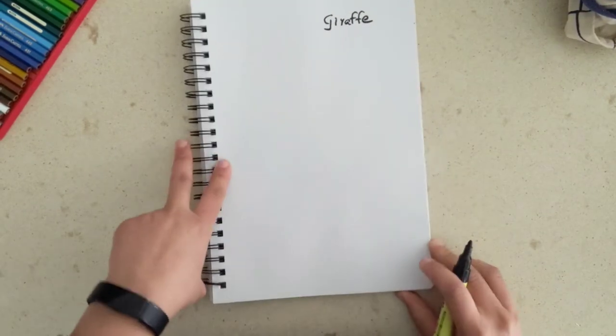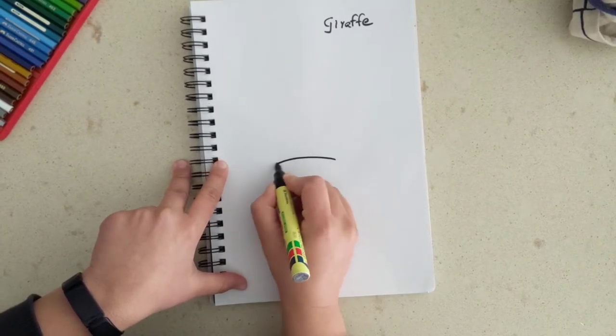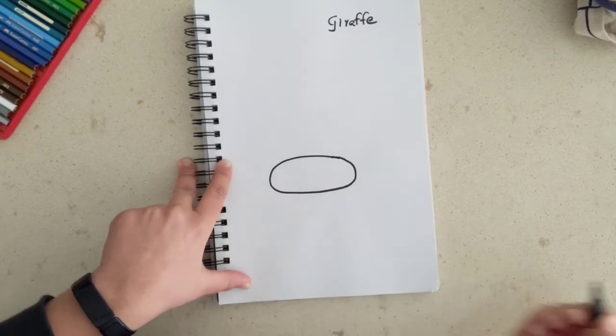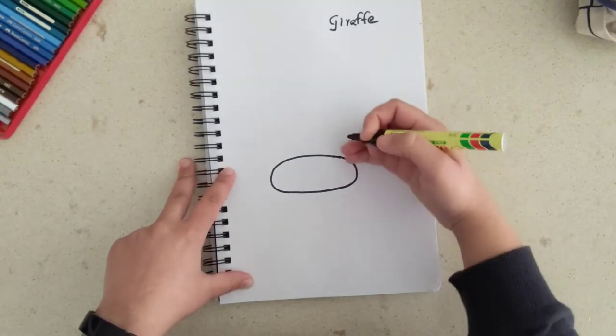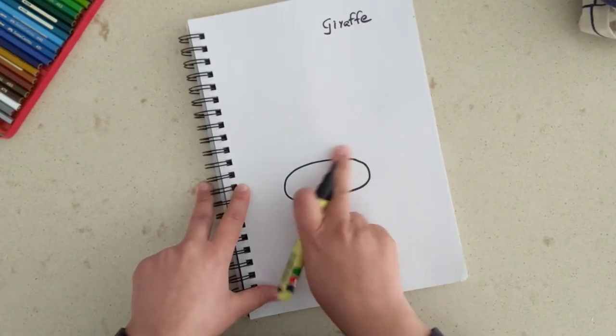Let's start, it's very easy to draw a giraffe. What you need to do is draw an oval, a lying down oval on your page. It's not in the center, it's towards the bottom half of the page. Draw an oval, this is going to be the giraffe's tummy, his stomach.